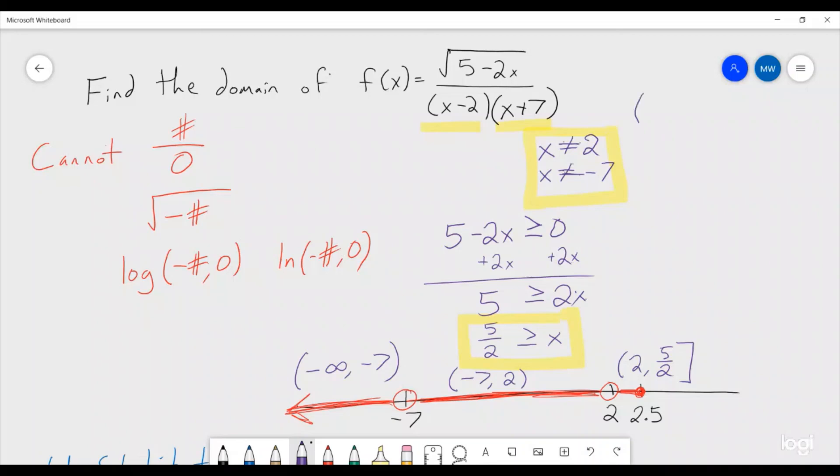So our answer will be negative infinity to negative 7 union with negative 7 to 2 union with 2 to 5 halves. And that is the domain of this function.